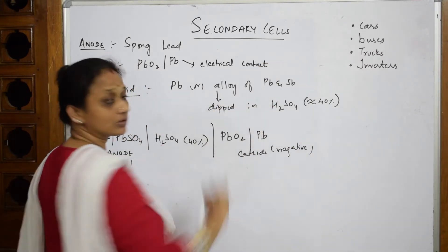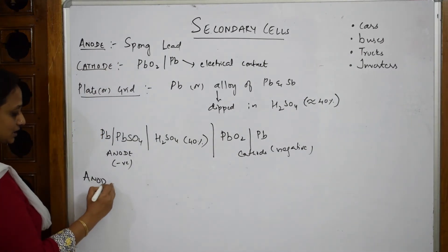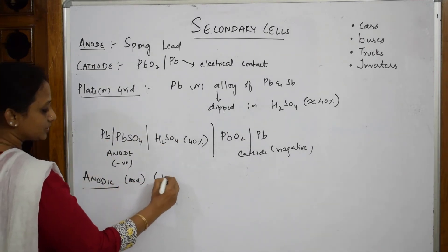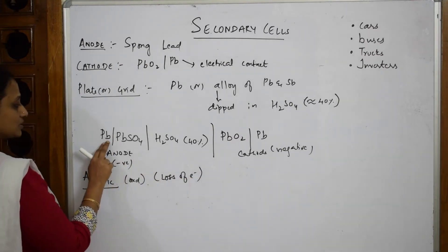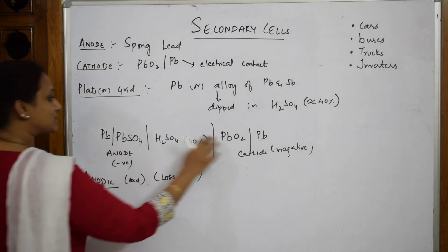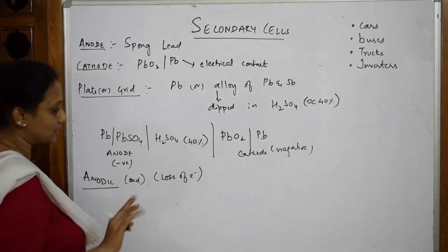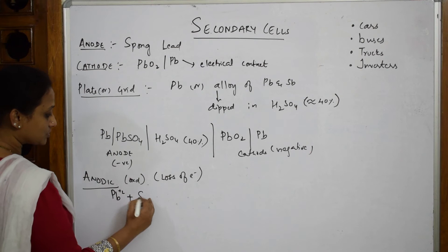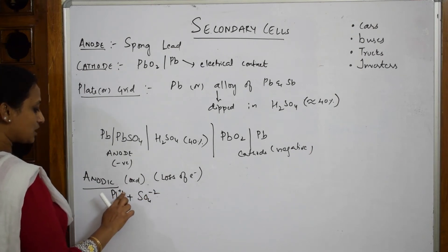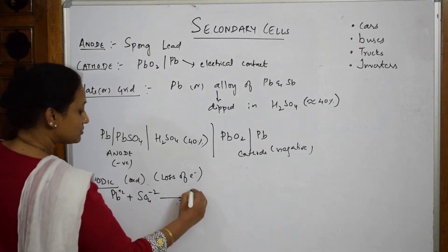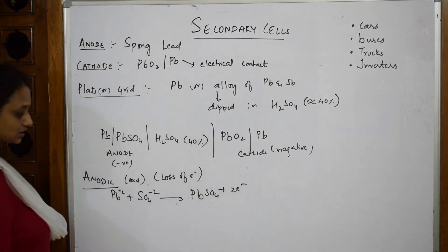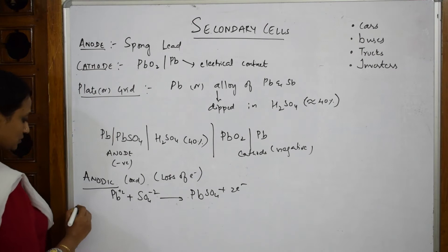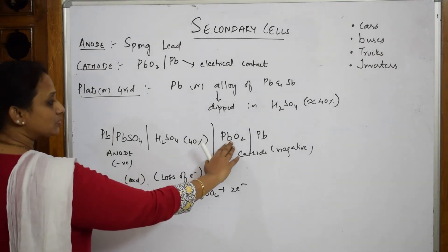For the anodic reaction — anode is oxidation, loss of electrons. Pb²⁺ combines with SO₄²⁻ to form PbSO₄, with 2 electrons lost: Pb + SO₄²⁻ → PbSO₄ + 2e⁻. These electrons travel from the anode to the cathode.